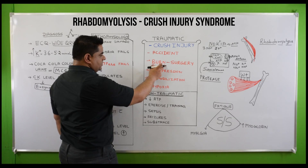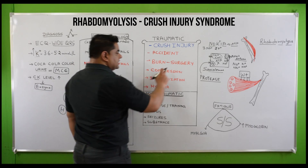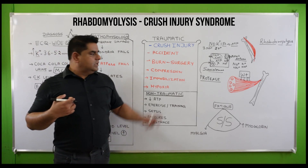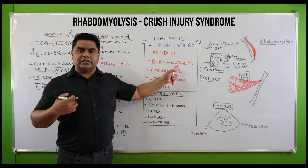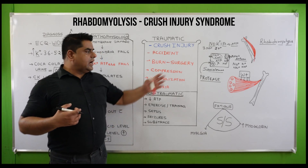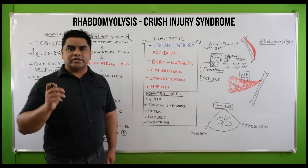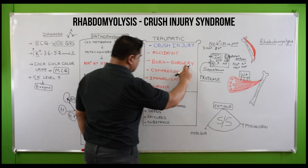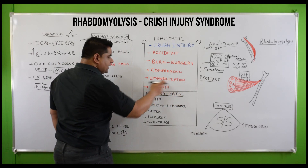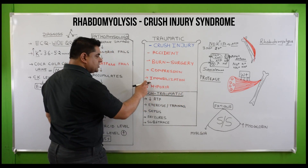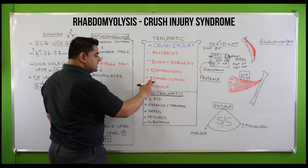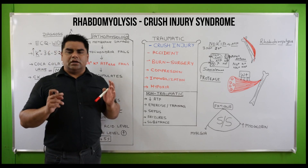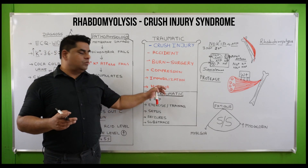Burn patients — the more the surface area burned, the more severe the muscle injury. Surgery by surgeons also causes insult to the skin, muscles, and organs, triggering an inflammatory process and injury to the muscles. Compression, immobilization due to fractures, surgery, pregnancy, and hypoxia — a deficiency of perfusion to the muscles — can also cause muscle injury.